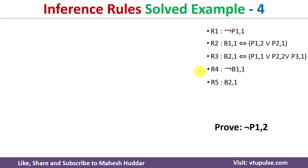In this case we have been given a knowledge base with five sentences, R1 to R5, and we need to prove negation of P12. To prove the sentence, we need to select a few of these sentences and then apply the inference rules so that we will reach this conclusion. The question is: which sentence should I select to start theorem proving?